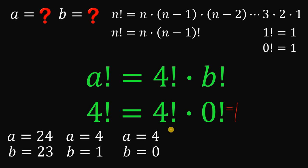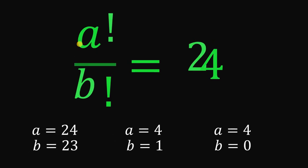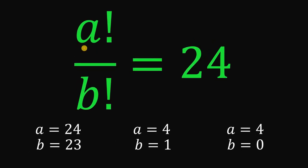Therefore, our answer to this question — what are the values of a and b given that a factorial over b factorial equals 24 — is: if a is 24, b is 23; if a is 4, b is 1; and if a is 4, b equals 0. And as always, we are done.